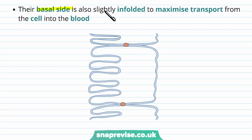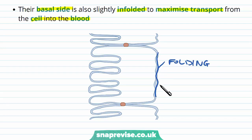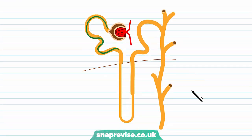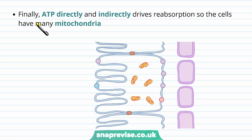The basal side of the cell also has folds — not microvilli, but folding that further maximizes transport from the cell into the blood by accommodating more pumps. Additionally, the proximal tubule overall is very tangled and coiled — hence the word convoluted — which increases the distance along which reabsorption can occur, allowing it to use more of the cortex space rather than going directly to the loop of Henle. Finally, the cells are packed with many mitochondria, because ATP directly drives active transport and indirectly drives secondary active transport, so under a micrograph you would see many mitochondria in these cells.